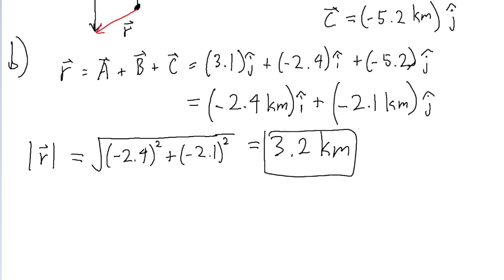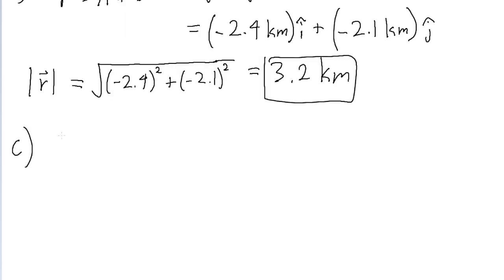So that is our answer to part B. Part C is asking us for the angle. So recall that when we have a vector broken into a horizontal or x component and a vertical or y component, then the angle of that vector is equal to the inverse tangent of the y component or the vertical component divided by the horizontal component. Or another way of thinking of it is the component with the j unit vector,